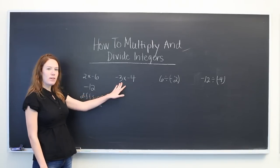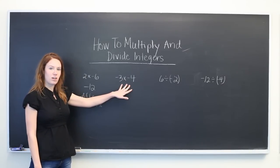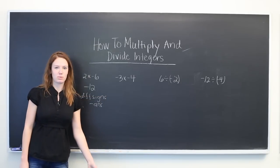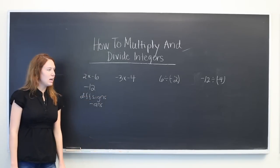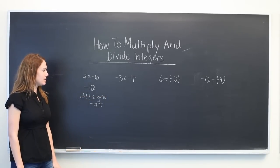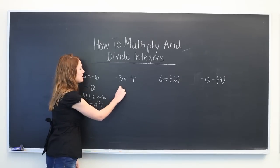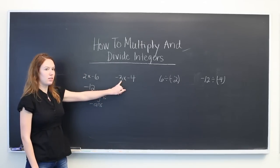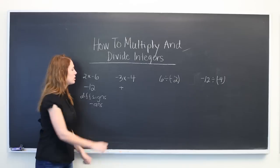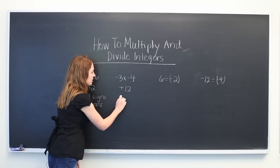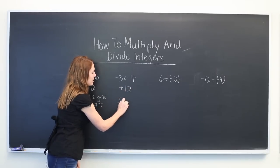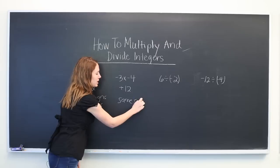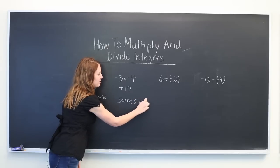Now we have an example where both signs are negative. This would also be the same if both signs were positive. In this case, the answer is going to be positive and we can just ignore the signs and say 3 times 4, which will give us 12. So same signs will mean a positive answer.